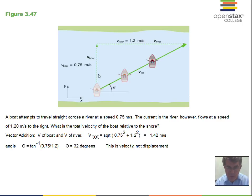We find the magnitude of the total velocity by using the Pythagorean theorem: square root of 0.75 squared plus 1.2 squared. We square the short sides, add them up, take the square root. I came up with 1.42 meters per second.